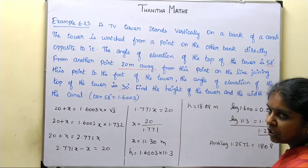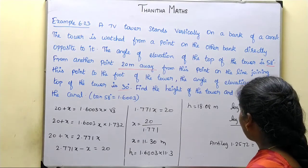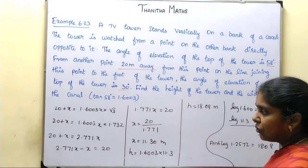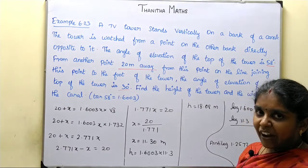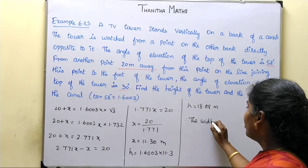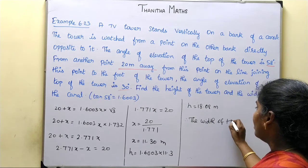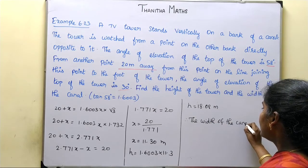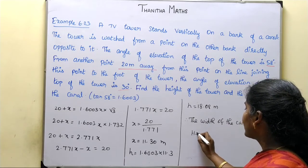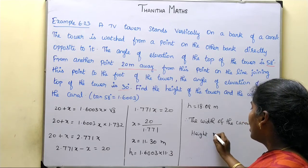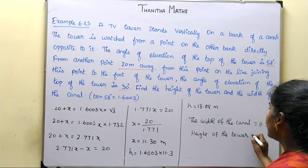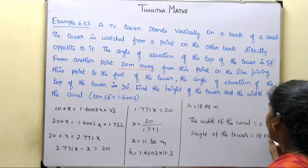So the final answers are: the width of the canal is 11.3 meters and the height of the tower is 18.08 meters. The book answer is approximately 17.9, with slight differences due to log table rounding.